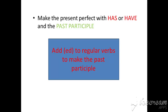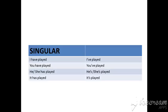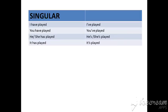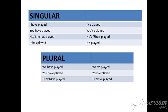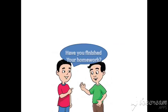For example: talk, talked, talked — so 'talked' is the past participle. Walk, walked, walked — so 'walked' is the past participle. For pronouns: I have played, you have played, he or she has played, it has played, we have played, you have played, they have played. Here we have two boys talking to each other.